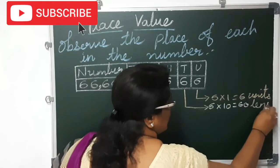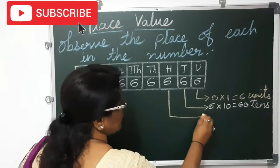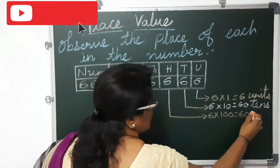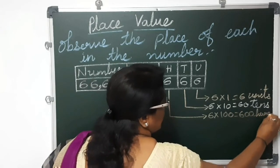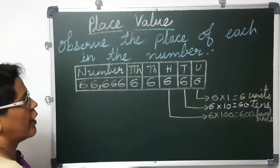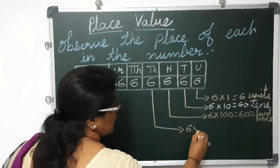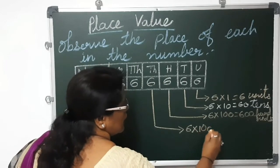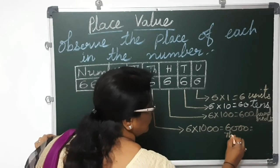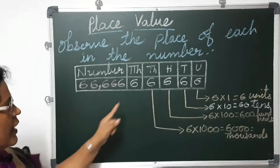The place value of this 6 is tens. Now this 6 in hundreds place: 6 into 100 equals 6 hundreds — H-U-N-D-R-E-D-S — it is hundreds. Now this 6: 6 into 1,000 equals 6,000, and it is thousands place. It denotes the place value as thousands.